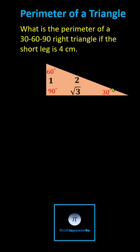Because we're given the short leg is four centimeters and one times four equals four, we know the hypotenuse has length two times four or eight, and the longer leg has length square root three times four or four square root three.